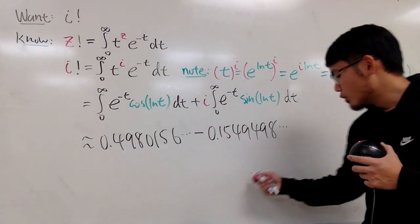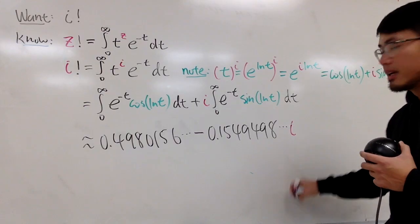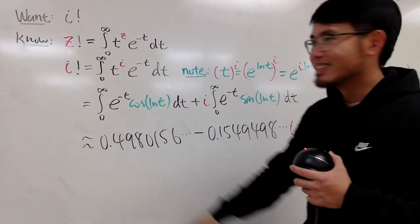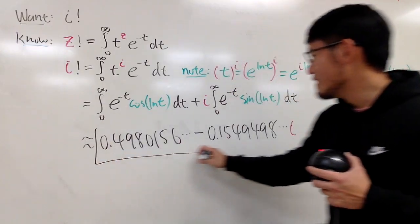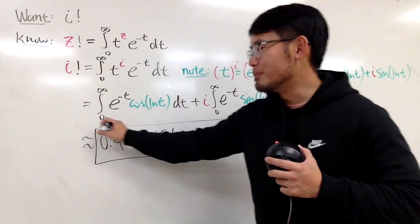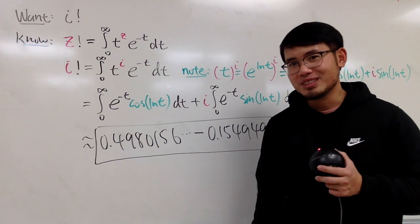In the end, don't forget the i. So, the idea is that, when you have i factorial, you end up with a very nice complex number right here. So, I think that's really cool.